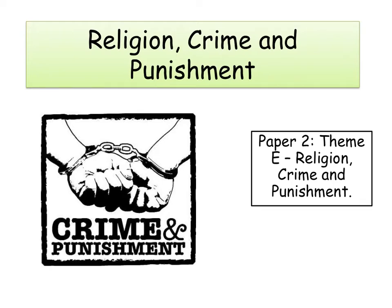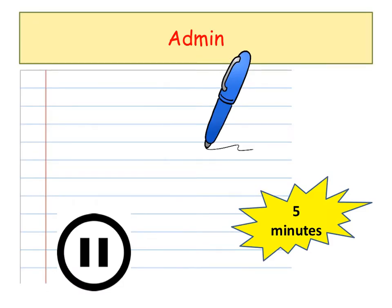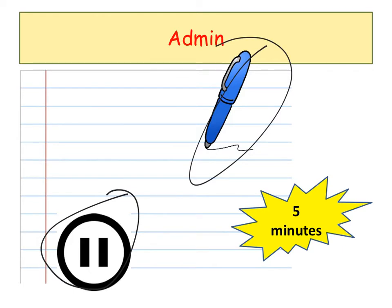This is for paper 2, which is the themes paper of AQA Religious Studies B, and it's theme E. Before we start we'll just go through a few admin points. If when I'm talking you see on the screen a pen that looks like this one, then it just means that you need to be writing something down. If you see the pause button like this one, then it just means that you could pause the video and take a little bit more time over the slide that's on.